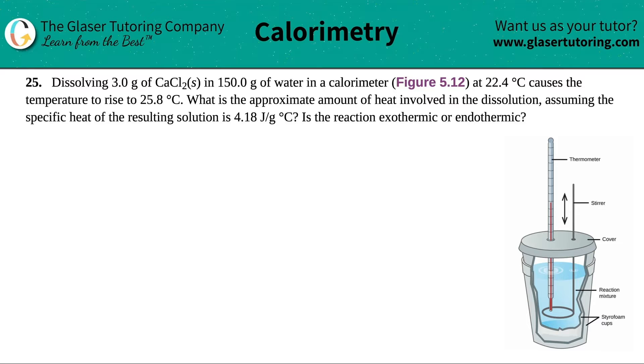Number 25: dissolving 3.0 grams of calcium chloride, which is CaCl2, in 150.0 grams of water in a calorimeter as shown in figure 5.12, which I put over here, at 22.4 degrees Celsius causes the temperature to rise to 25.8 degrees Celsius.